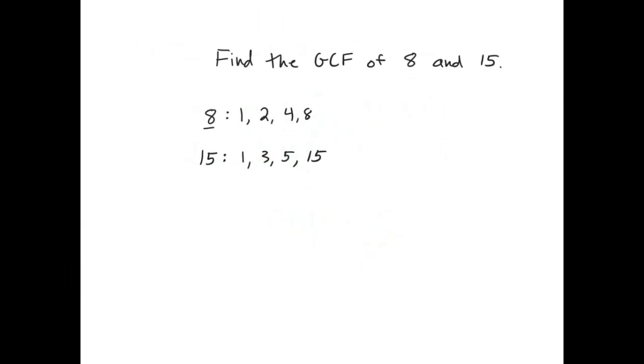If you're asked to find the greatest common factor of two numbers, and when you consider the factors of the numbers, 8 and 15 in this example, the only common factor is 1. If the only common factor between two numbers is 1, then we call those two numbers relatively prime, because related to each other, they're prime. There are no common factors other than 1.